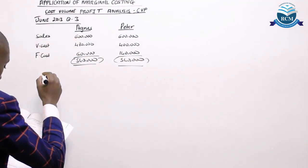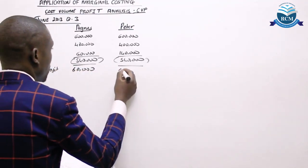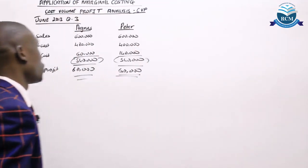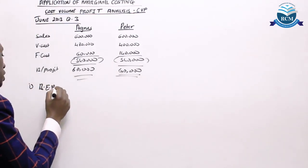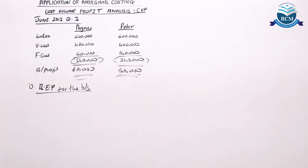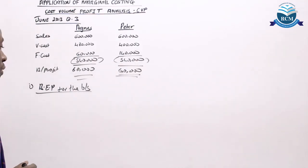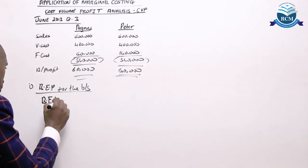Our budgeted profit was a figure of 60,000 for each business. The examiner first wanted us to determine the break-even point for both businesses. The clue here is I'm not seeing anywhere where I'm given sales in units or variable cost per unit — but we've been given entirely the total cost and total revenue, and we're asked to determine the break-even point. Remember, this time you're doing it in value.